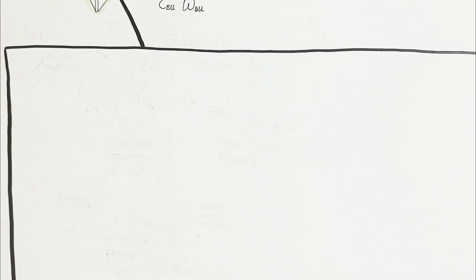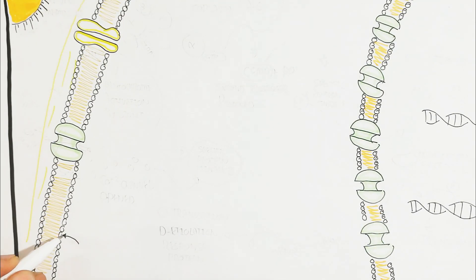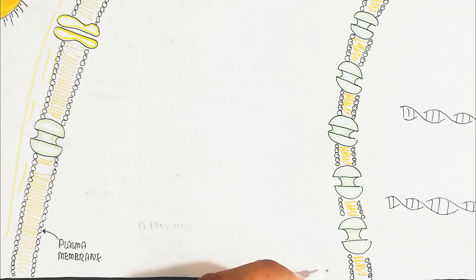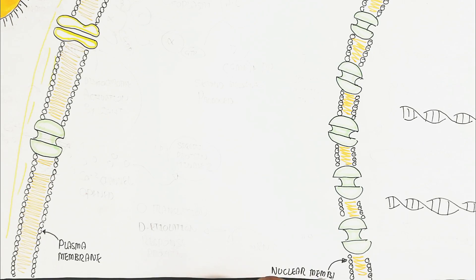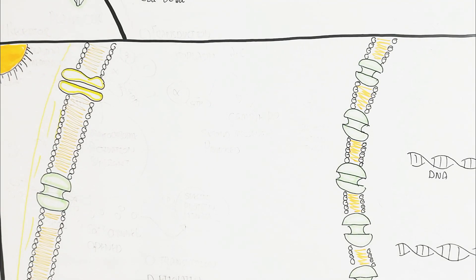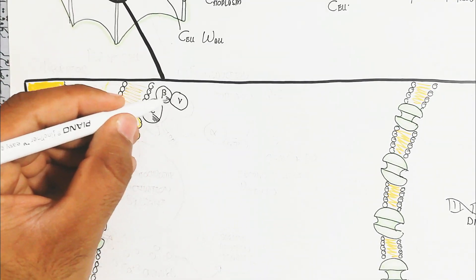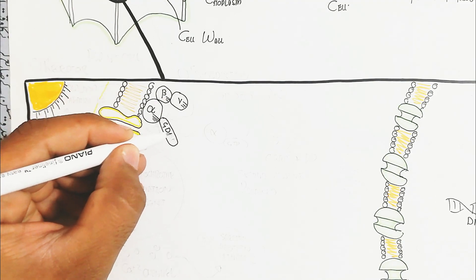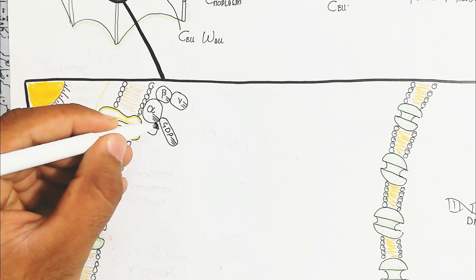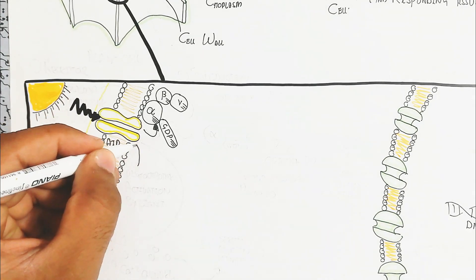Signal transduction requires a receptor, and the transduction leads to a response. Looking at the plasma membrane and nuclear membrane — the nuclear membrane contains genetic material and nuclear pores. On the plasma membrane there is a G-coupled protein receptor, such as phytochrome, which is activated by light.